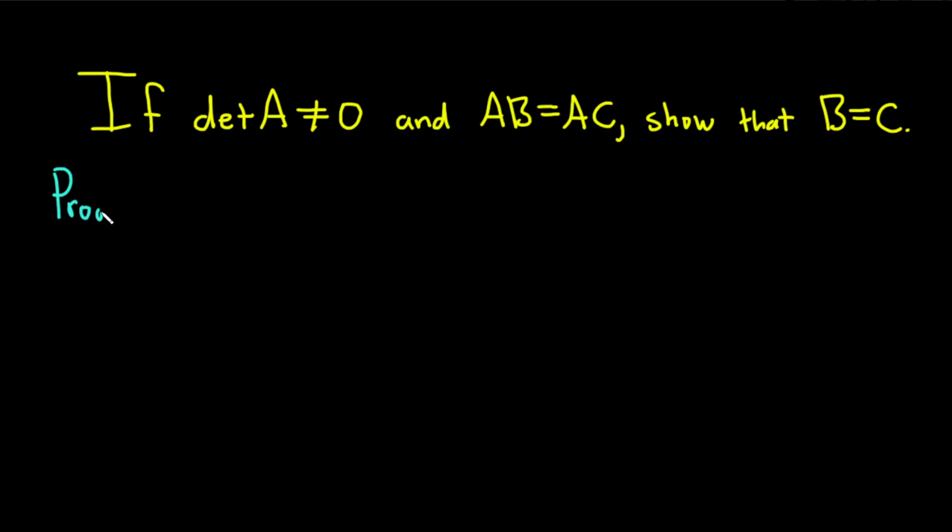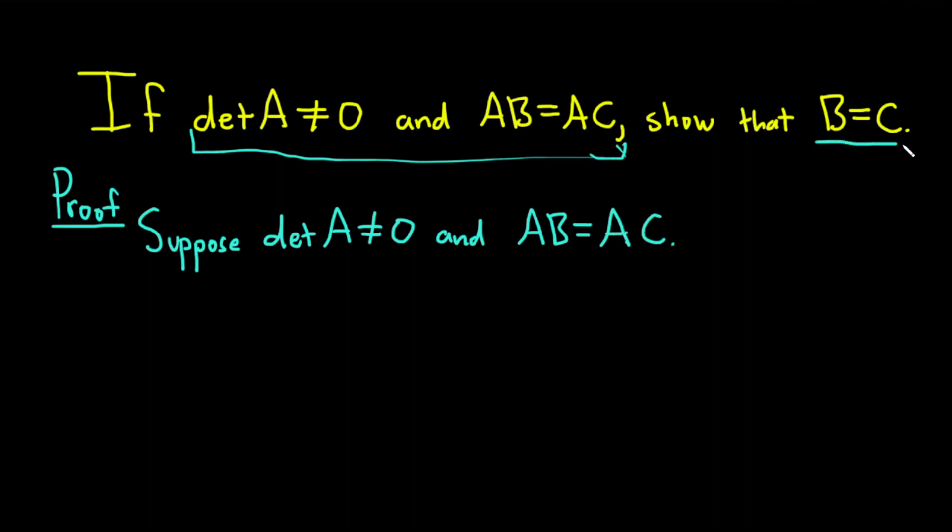Proof. So we have to prove if the determinant of A is not 0 and AB is equal to AC, then B is equal to C. So this is what we have to assume. So I'm actually going to go ahead and write that down again. I'm going to say suppose that the determinant of A is not 0 and AB equals AC.